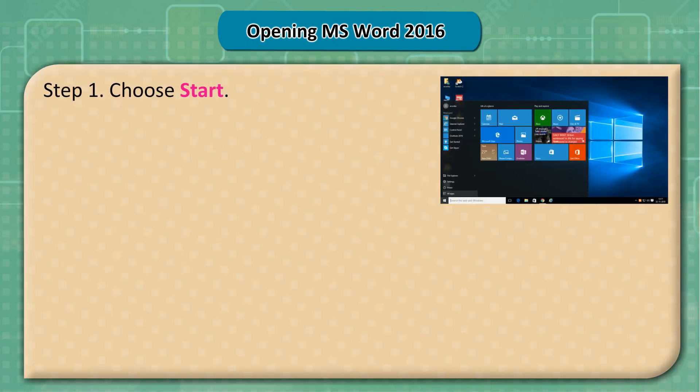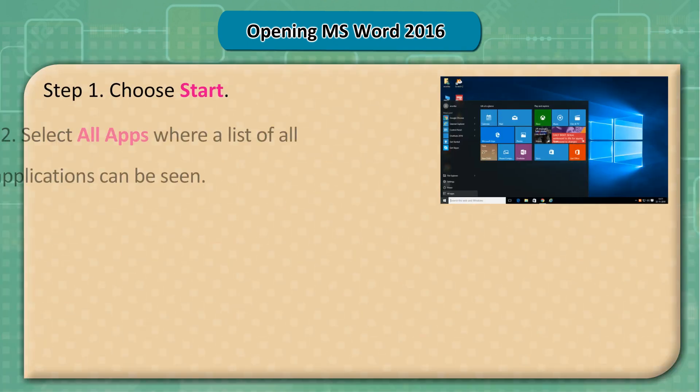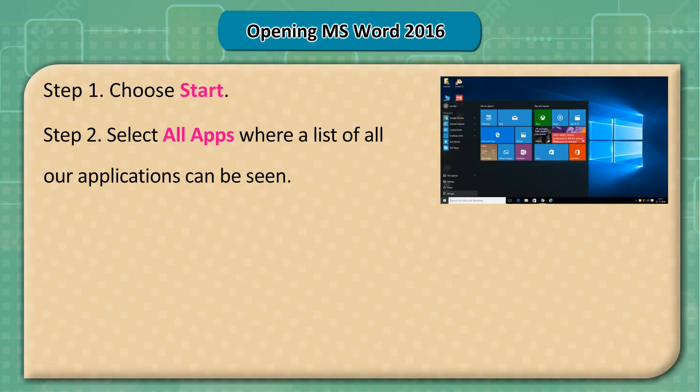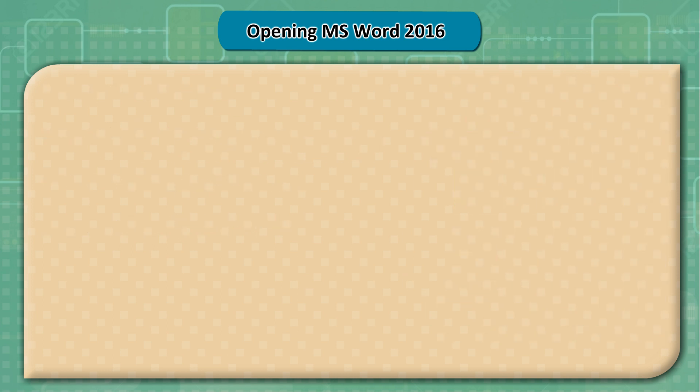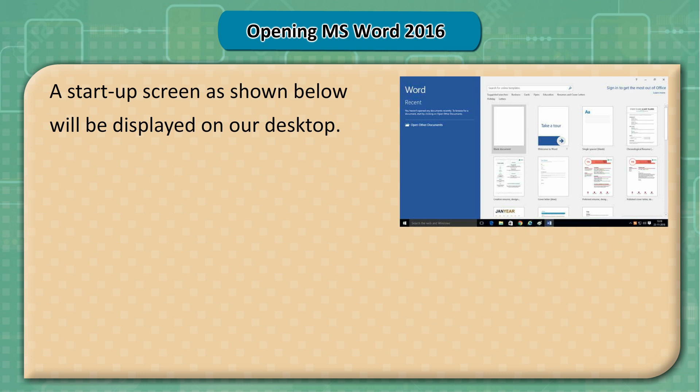Opening MS Word 2016. Step 1: Choose Start. Step 2: Select All Apps, where a list of all our applications can be seen. Step 3: Select Word 2016. A Startup Screen will be displayed on our Desktop.